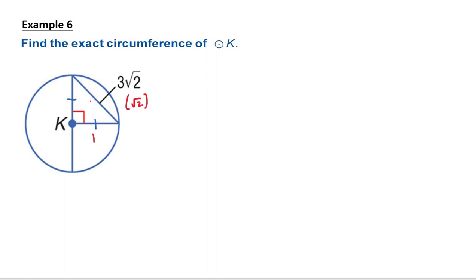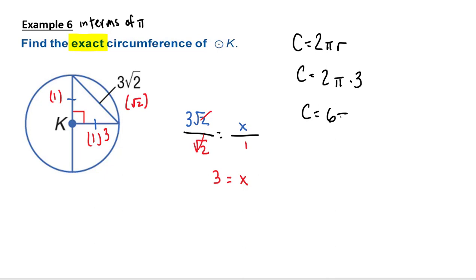So here, remember, that's root 2. This is one. This is one. And every 45-45-90 triangle so 3 root 2 over root 2 equals, I'm looking for the radius. I'm going to call it X over 1. Well, that left side simplifies to X. The right side simplifies to 3. So I know my radius is 3, the exact circumference. That's a fancy way of a math teacher saying in terms of pi. So remember, our circumference is 2 pi r. Circumference is 2 pi times 3. Circumference is 6 pi.